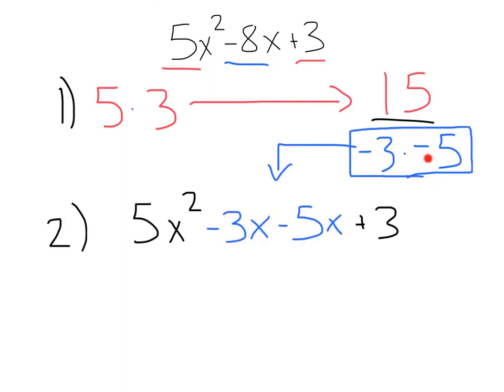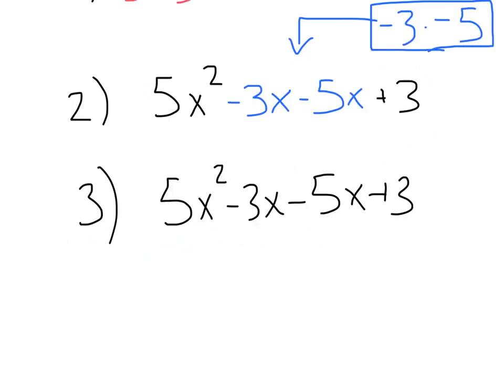Second, let's take these factors and replace them in for our B term. So instead of negative 8, we've written negative 3x minus 5x to give us our four terms. From here, we can group. Ain't no party like a grouping party, because a grouping party don't stop.